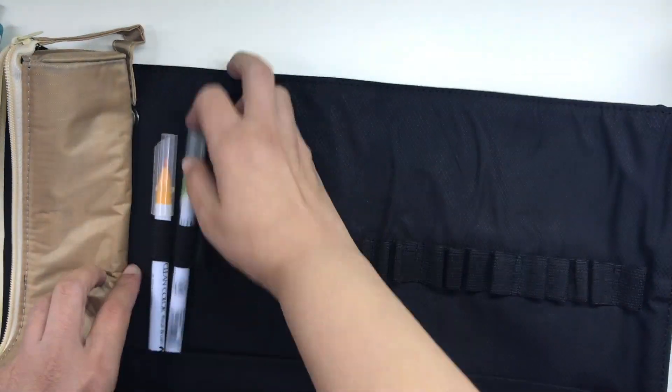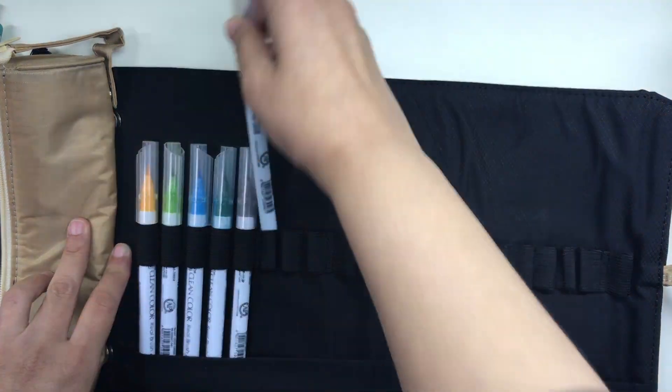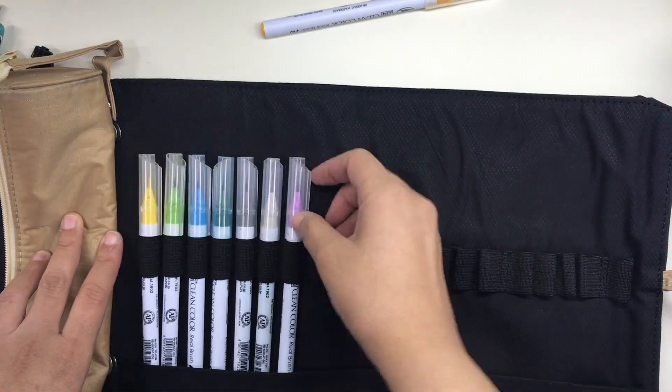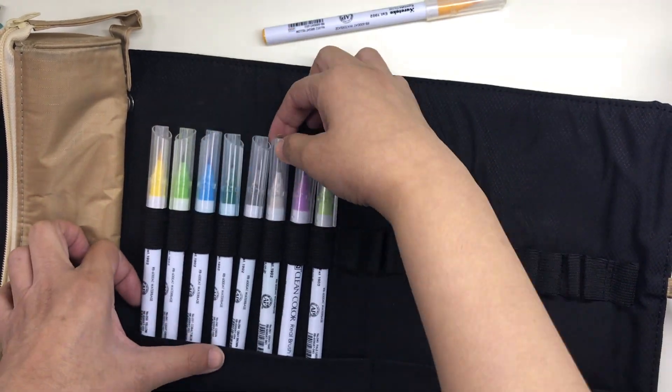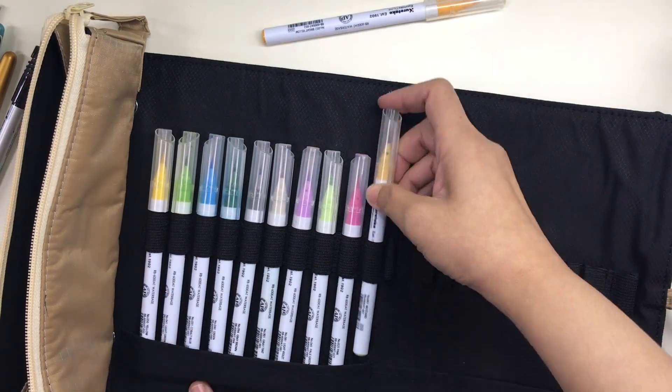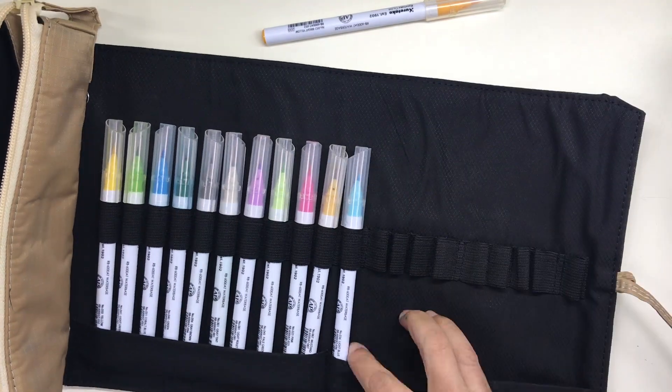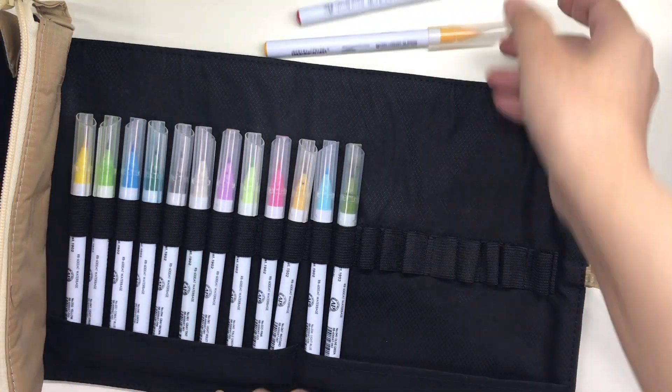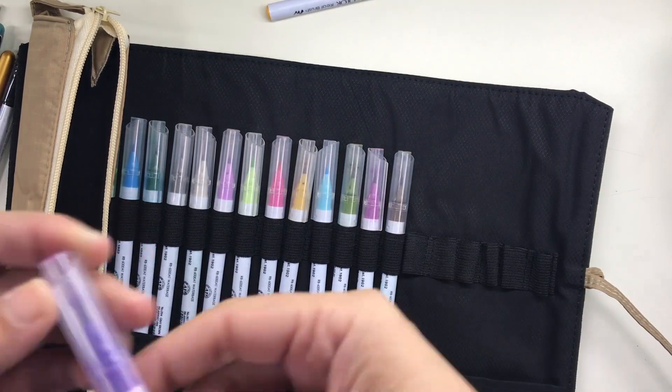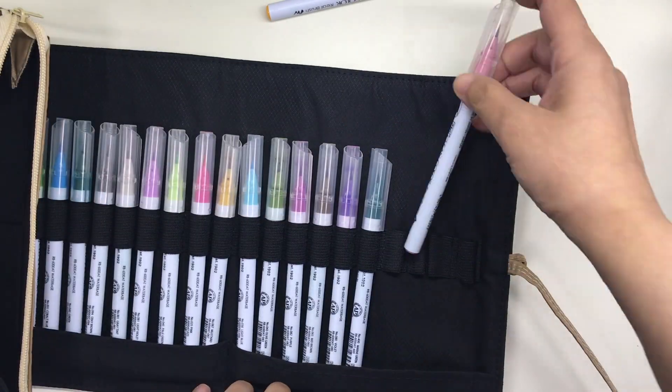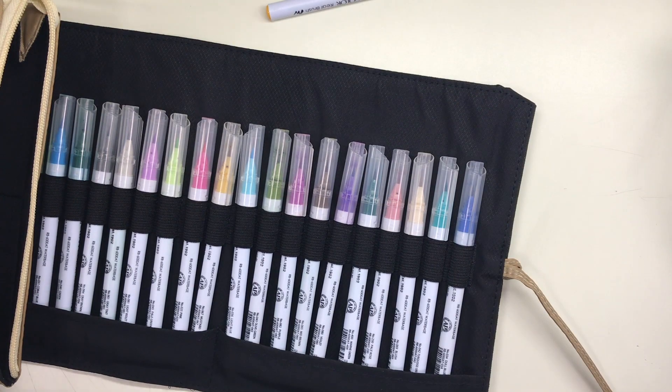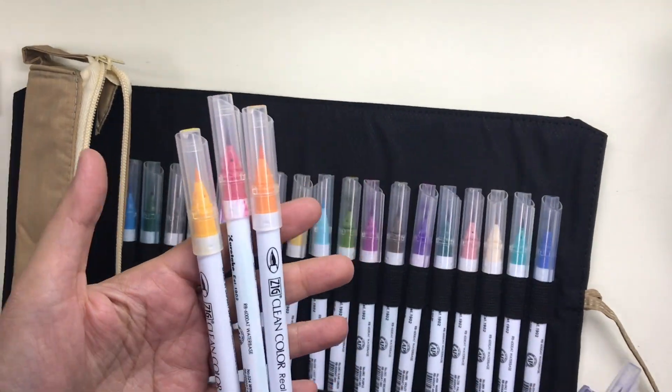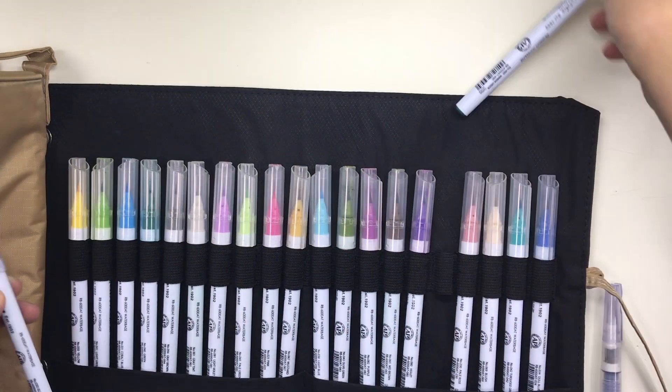As you know, I use the Zig Clean Color Real Brush pens for my Hyperdex. Here I am putting them into my new pen roll from Fylde. I have a video about this pen roll in my channel and I will leave a link in the description box for you. I have been using these pens since around July 2017 and they're all I ever used for my Hyperdex. But because these pens are water-based, you can actually lift them with water.